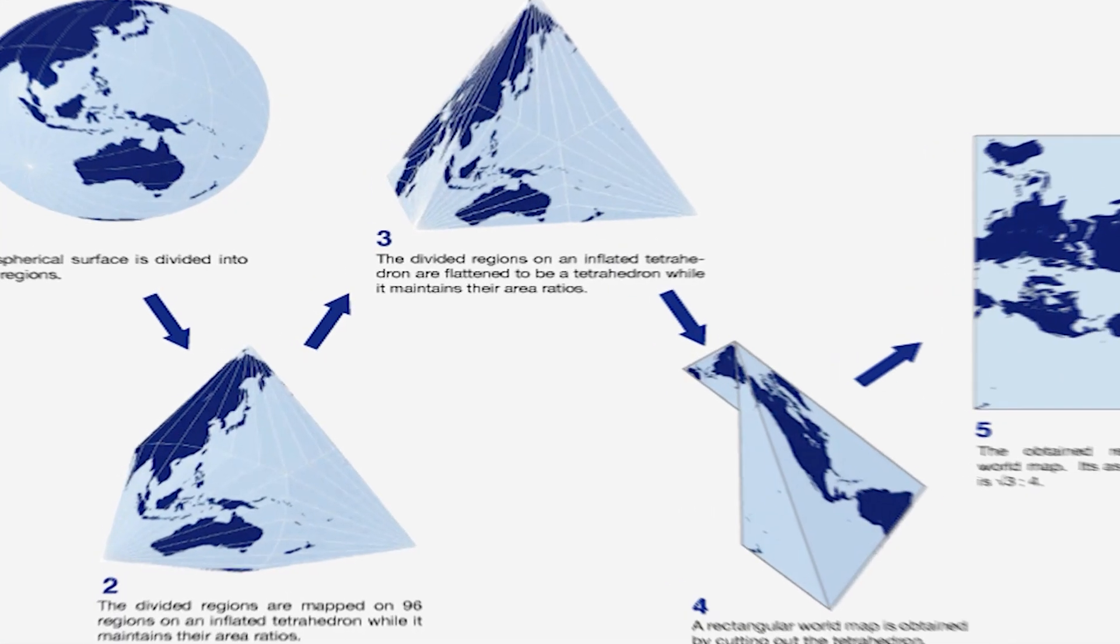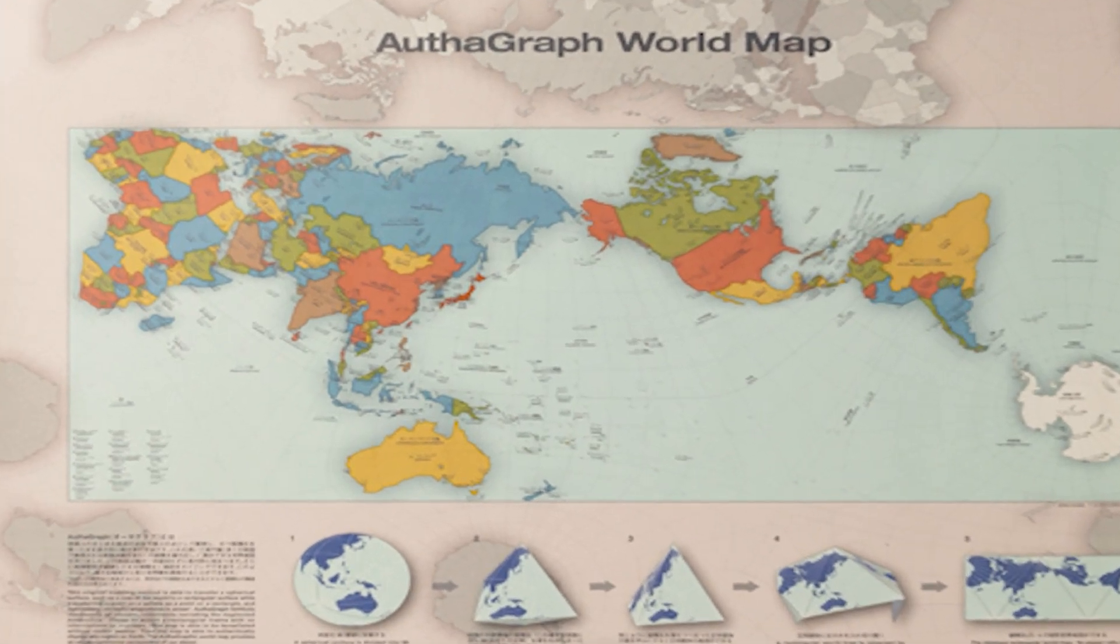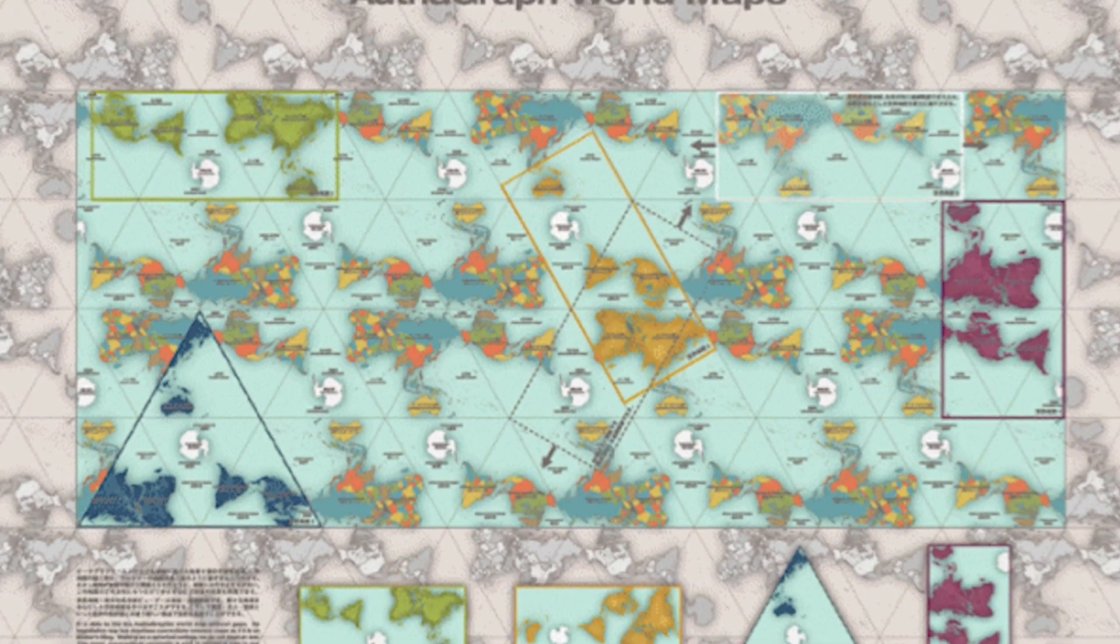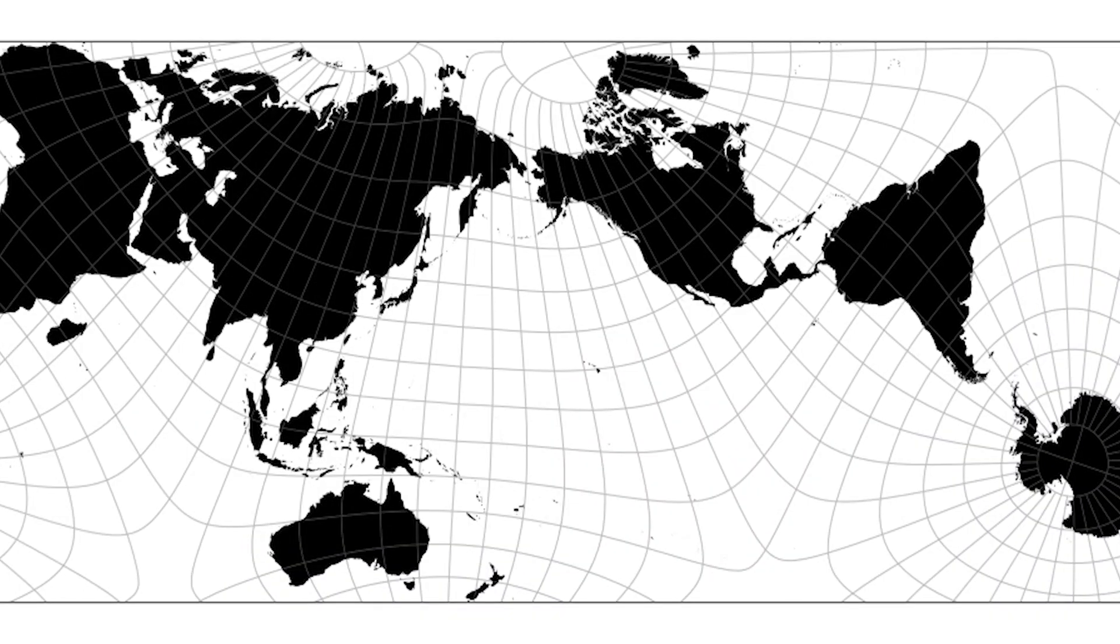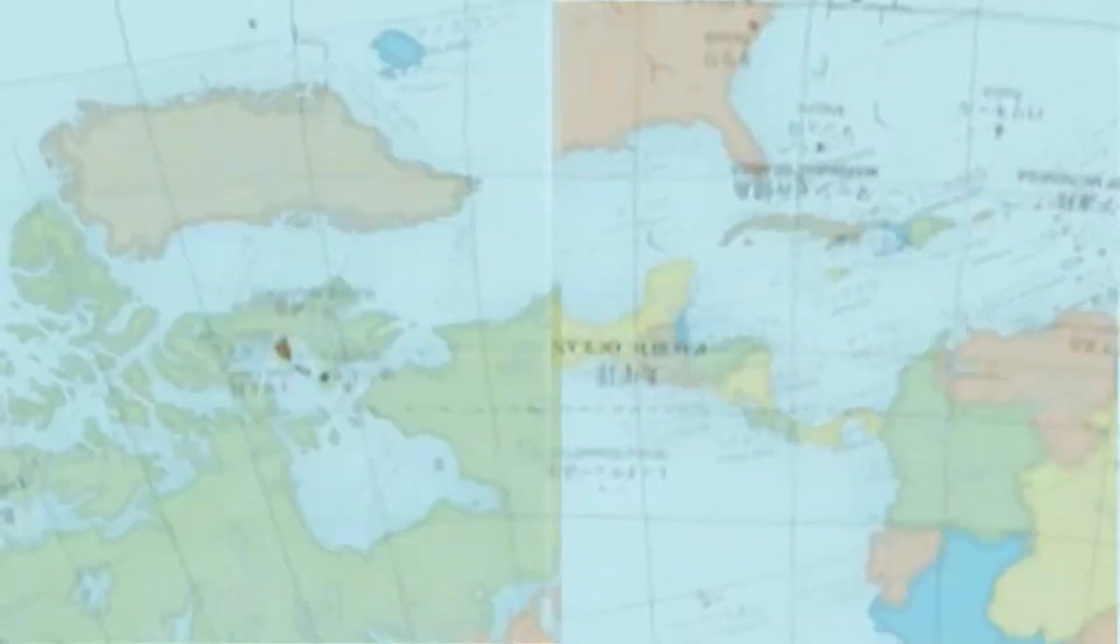This map attempted to eliminate shape distortion while also improving size accuracy. According to AuthaGraph.com, this map was constructed by splitting our planet's spherical surface into 96 triangles and then transferring it to a tetrahedron while keeping the area's proportions. Finally, it's spread into a rectangle.